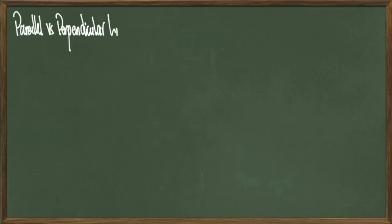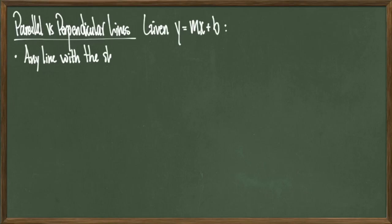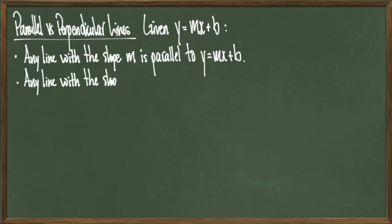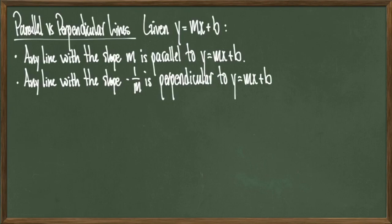For a second to last example, we'll talk about parallel versus perpendicular lines. So in this setup, I'm going to be given y equals mx plus b. Any line with the slope m is said to be parallel to y equals mx plus b. And any line with the slope minus 1 over m is said to be perpendicular to y equals mx plus b. And I'm talking about parallel and perpendicular in the geometric sense. And just as a shorthand, I'll use vertical bars to denote parallel, and a vertical and horizontal crossing bar to denote perpendicular. These notations are fairly common.